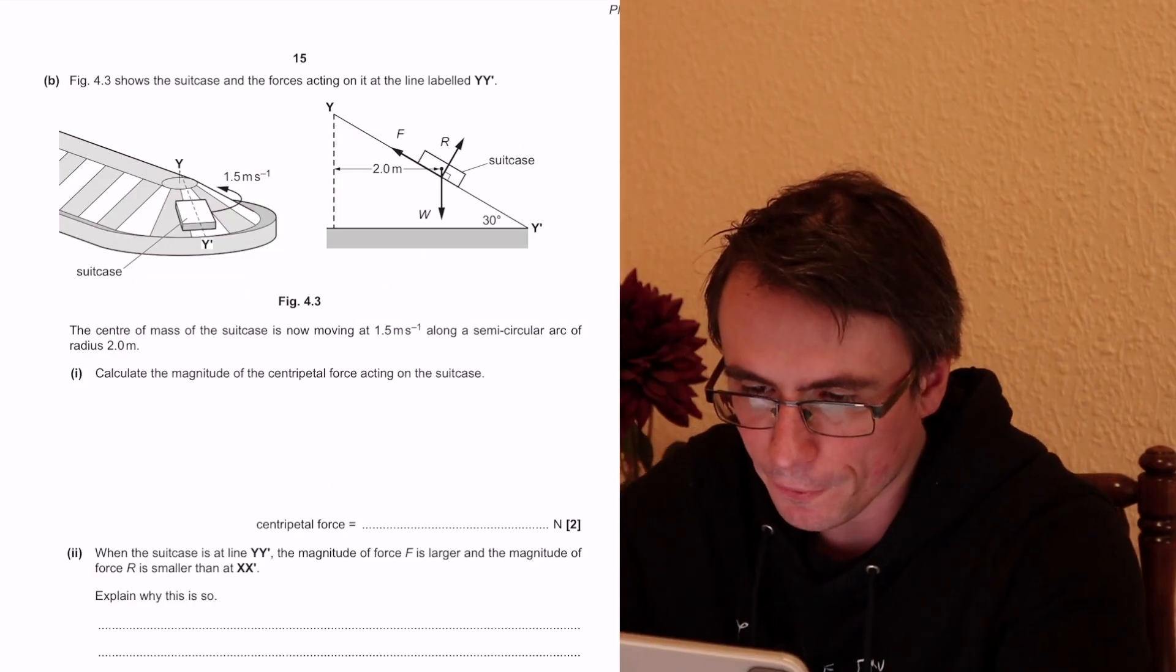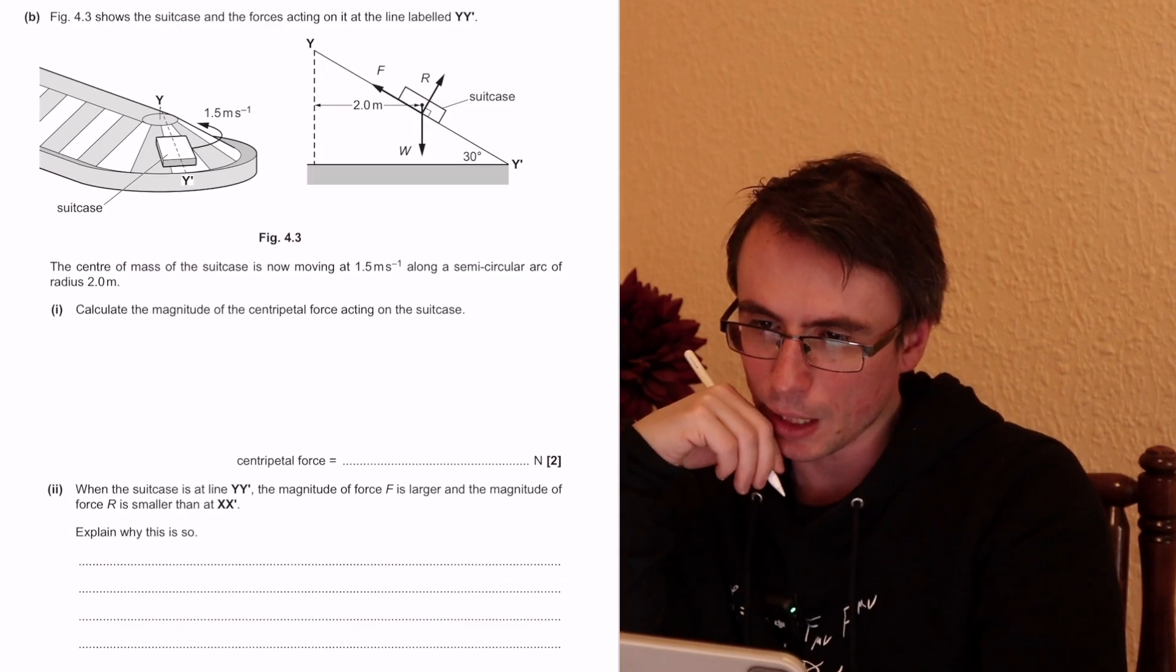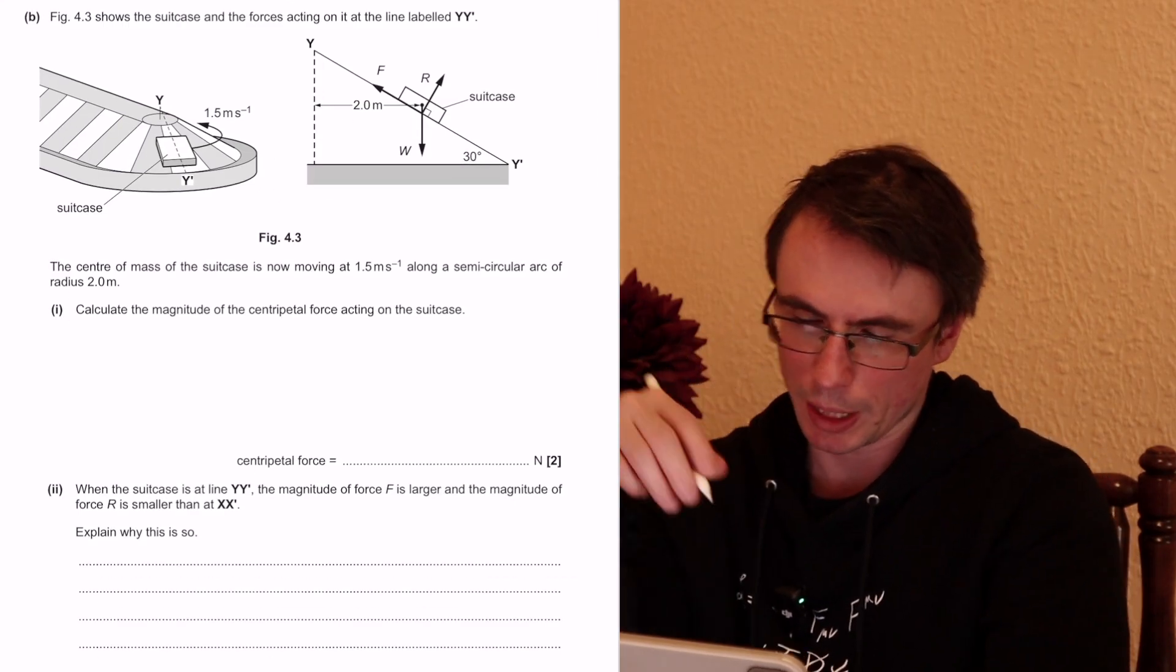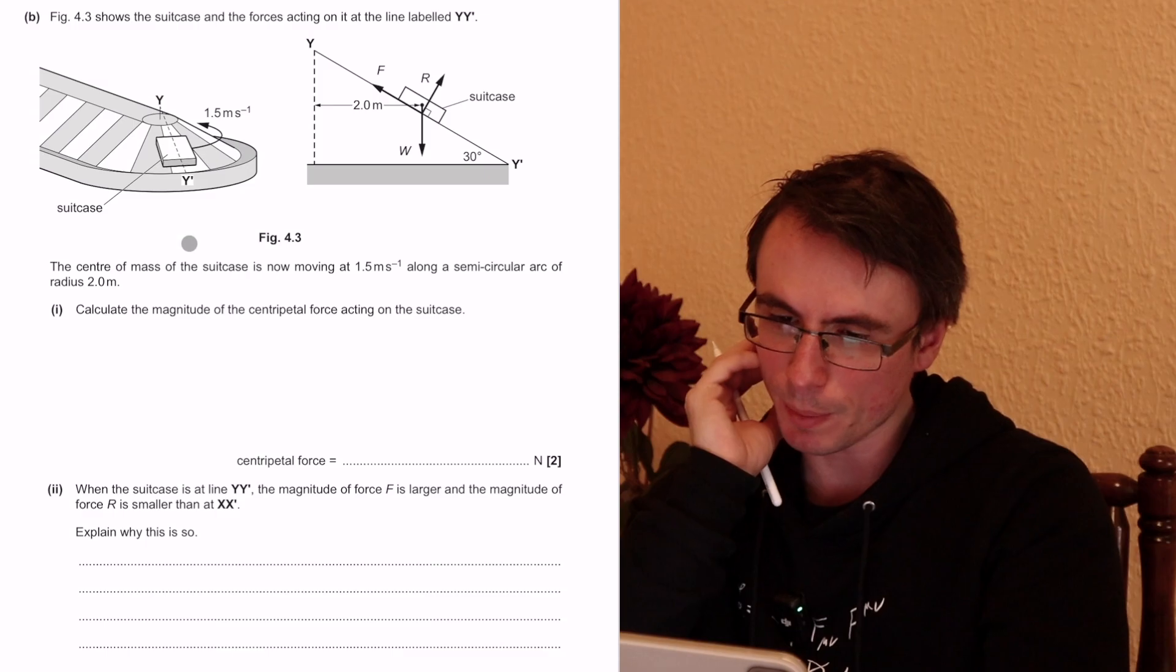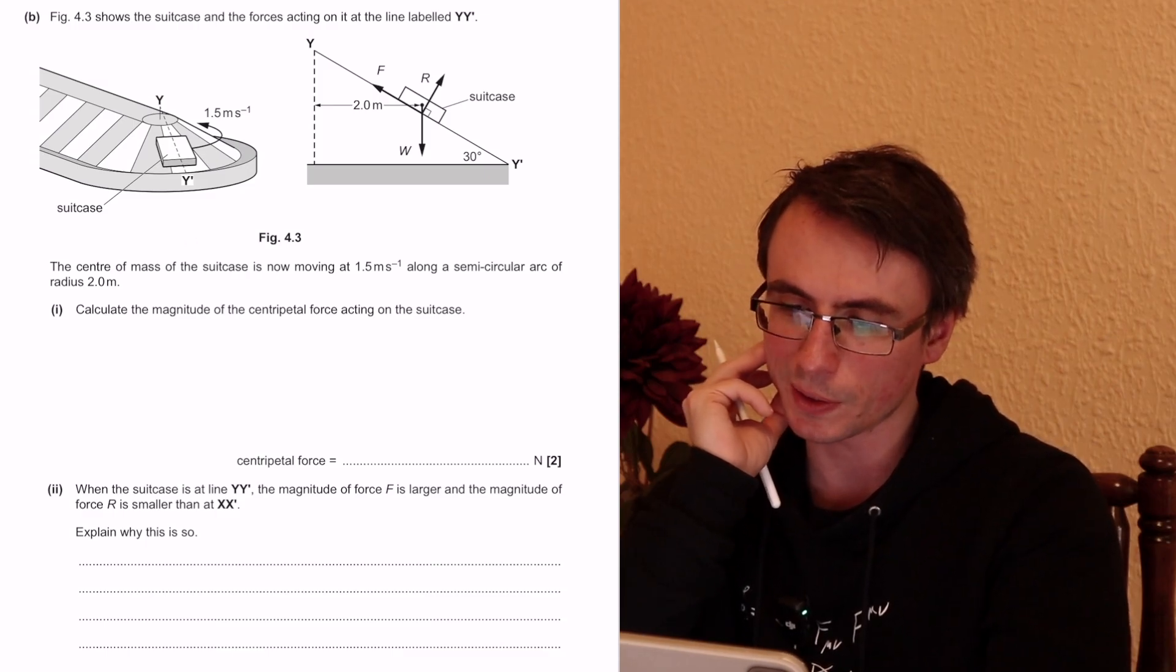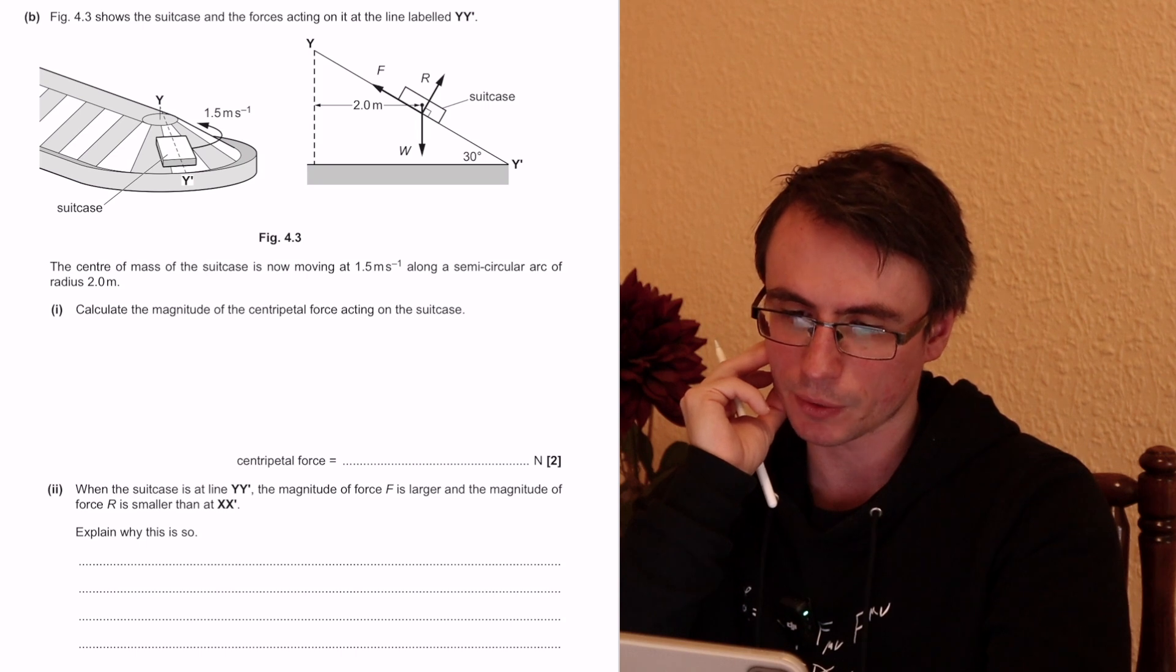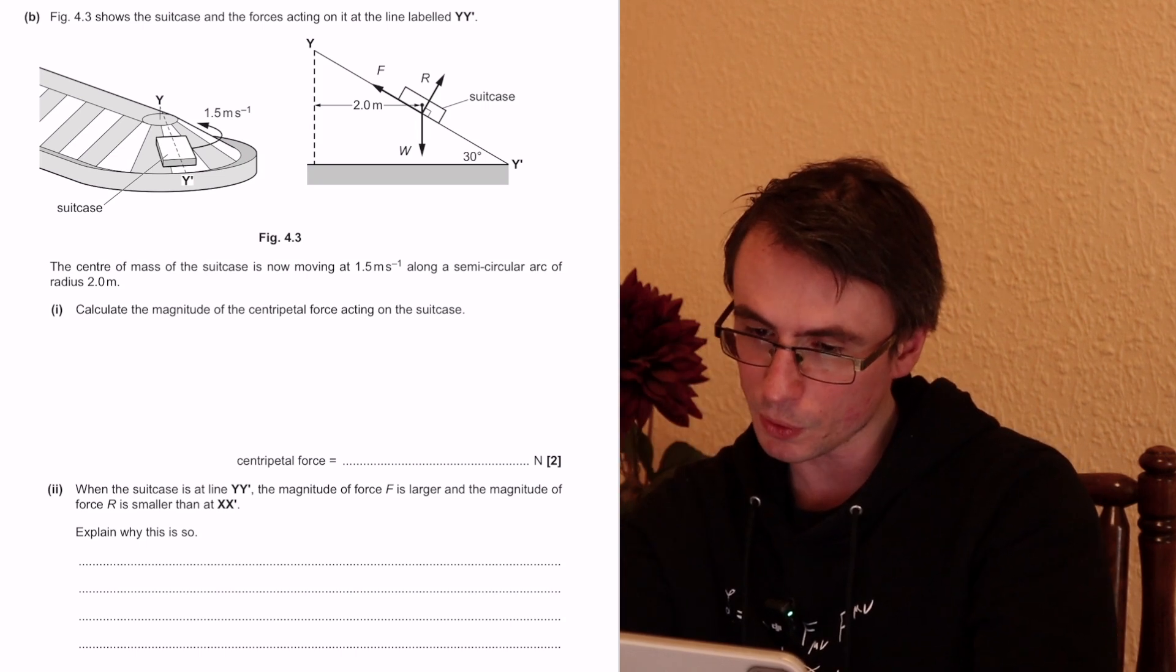Okay, next one. The figure shows the suitcase and the forces acting on it at the line labeled yy prime. Okay, so now we have the suitcase is actually turning around this line. The central mass of the suitcase is now moving at 1.5 meters per second along a semi-circular arc of radius 2 meters. Calculate the magnitude of the centripetal force acting on the suitcase. So far not so bad.